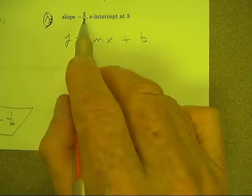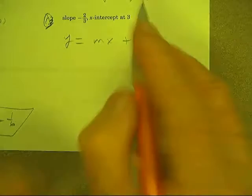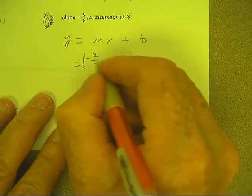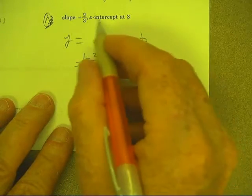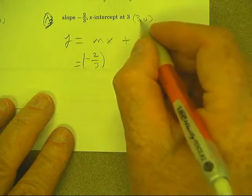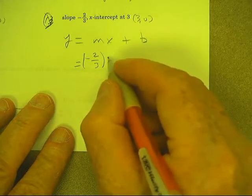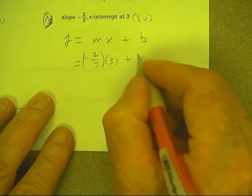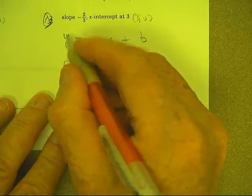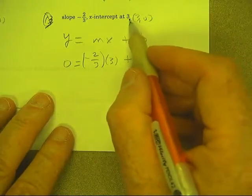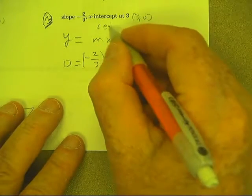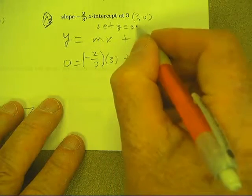Welcome back. Here we go with the slope of negative two-thirds and an x-intercept of 3 — that's the point (3, 0). If you missed this, remember that to find the x-intercept, we let y equal 0.